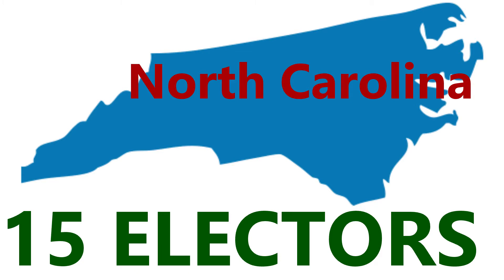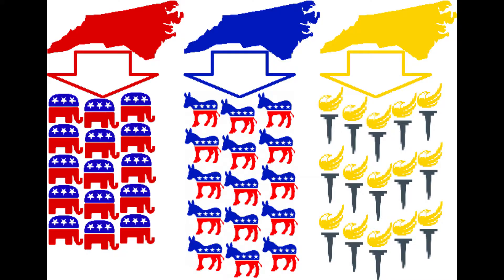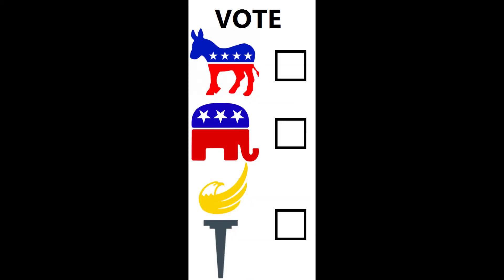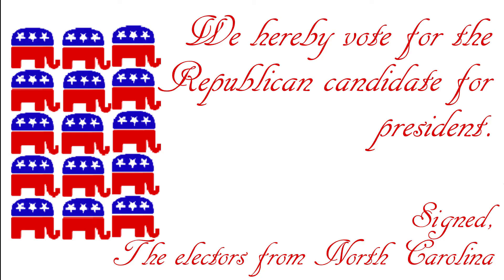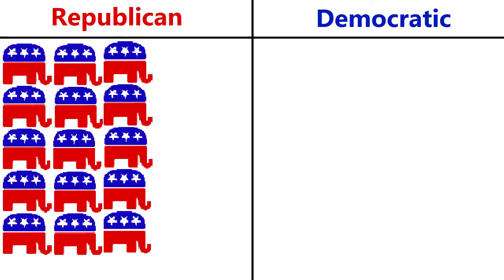Now let's look at, say, North Carolina, which has 15 electors. The state Republican, Democratic, and Libertarian parties will each have 15 electors. When you vote in November, you vote for the candidate of your choice. Let's say that the Republican candidate wins in North Carolina. Then in December, the 15 Republican electors will vote for the Republican candidate, giving the Republican candidate 15 electors in the college.